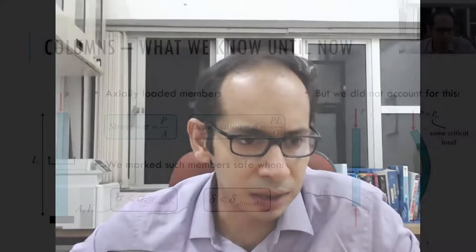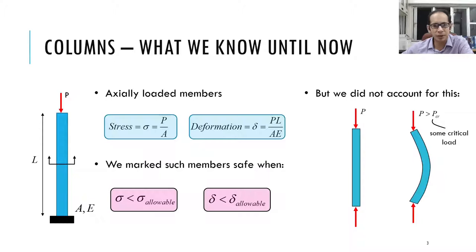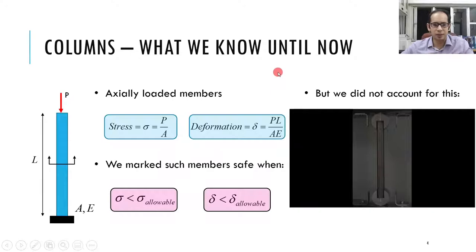We did not account for this phenomenon previously. For small loads everything is normal, but beyond a particular load the member starts to buckle. There is some load P-critical — the critical load. Let me go ahead and show you an experimental test so you get a clearer idea of what I am talking about.